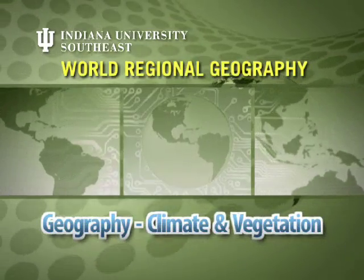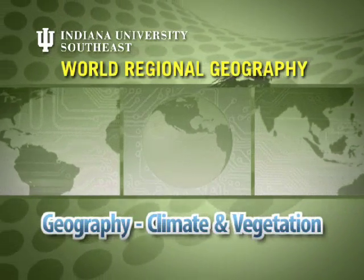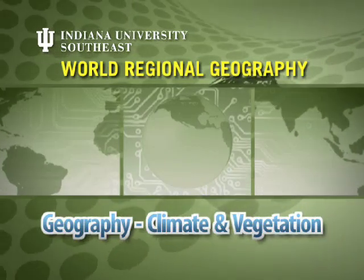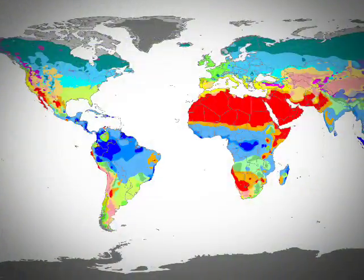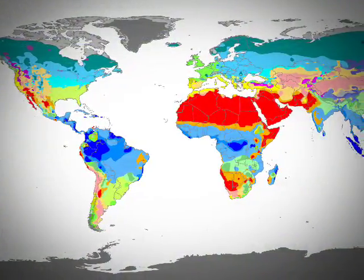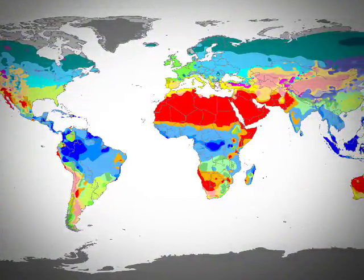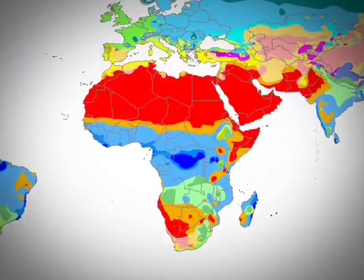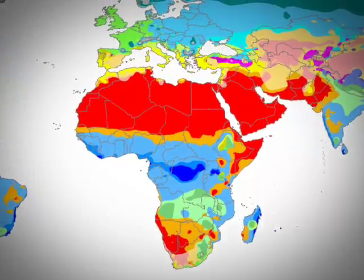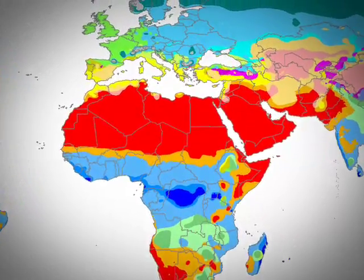It is important to understand the general distribution of climate zones across our planet. The various combinations of precipitation, temperature, latitude, and elevation produce a variety of local climates.